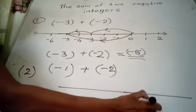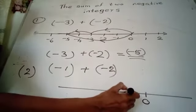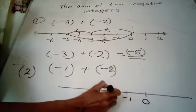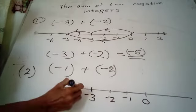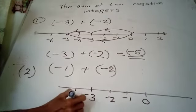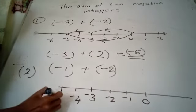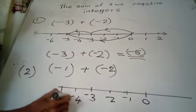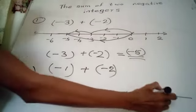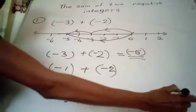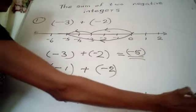Starting from 0, we mark negative 1, negative 2, negative 3, negative 4, negative 5, and positive 1, 2.